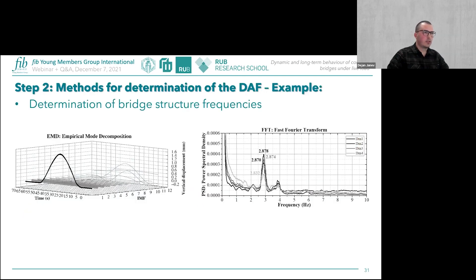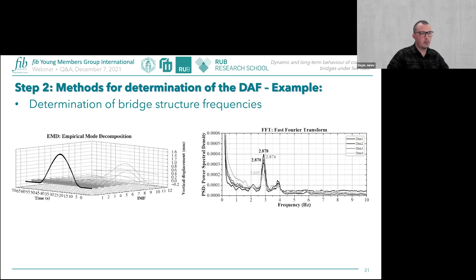By way of example, the structural natural frequency is obtained using the EMD method. EMD decomposes measured signals by progressively excluding components: the first IMF contains the highest frequency while the last contains the lowest. Removing the first few high-frequency IMF components is equivalent to low-pass filtering. The FFT algorithm is then applied to transform the primary signal from time to frequency domain, and combining EMD and FFT allows more accurate identification of the structural natural frequency.